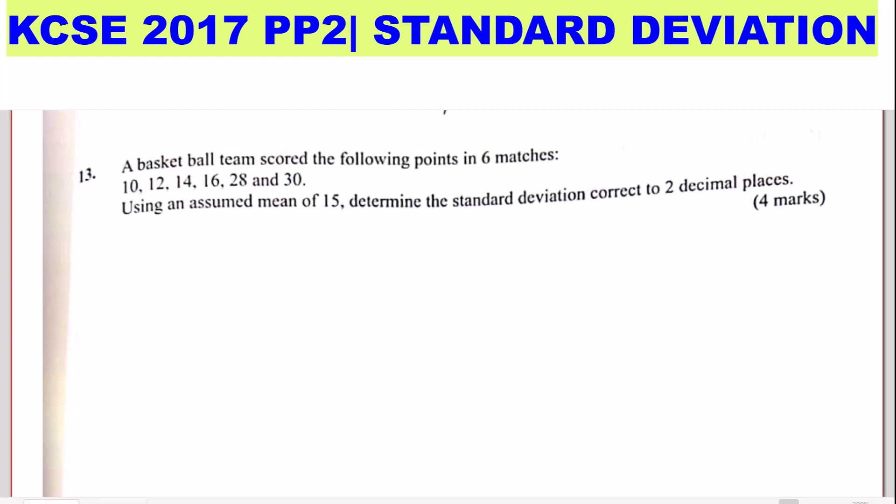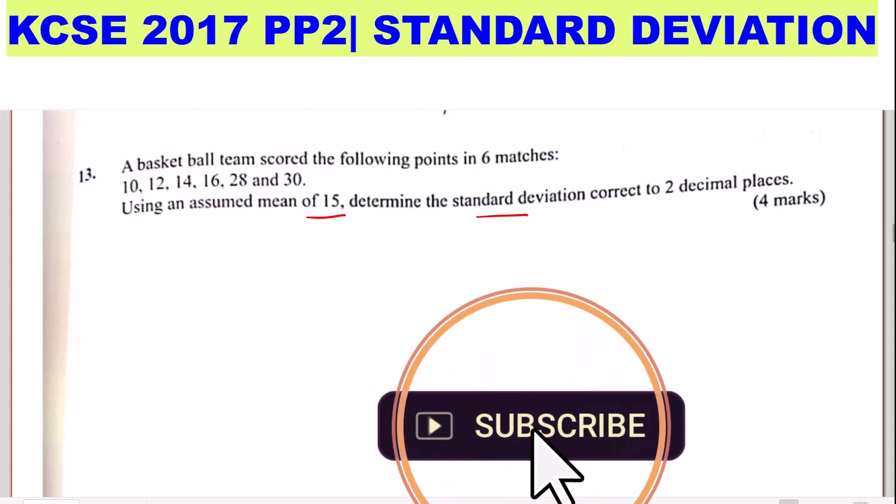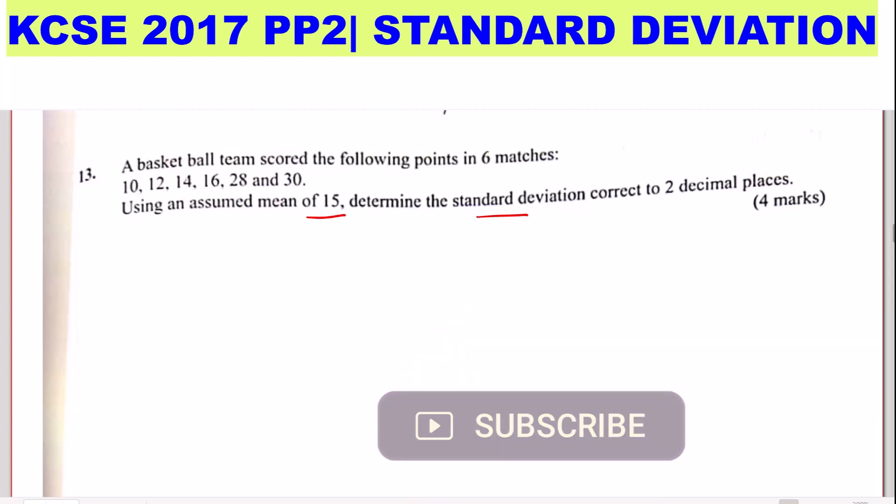So we require to determine the standard deviation and this is ungrouped data. You are given the assumed mean which is 15 and the scores are here. These are the points: 10, 12, 14, 16, 28, and 30.